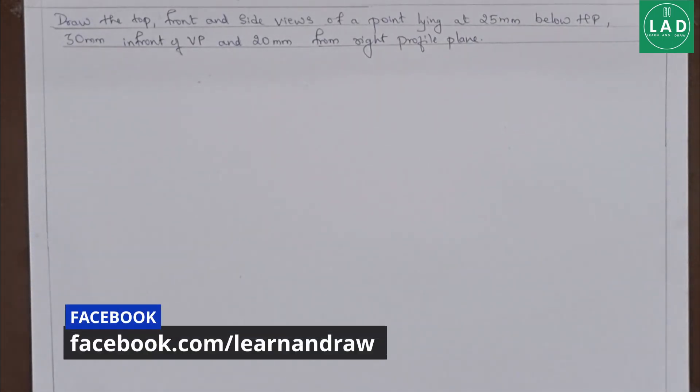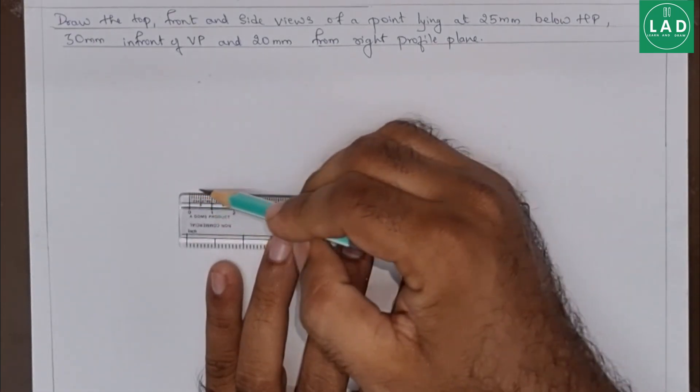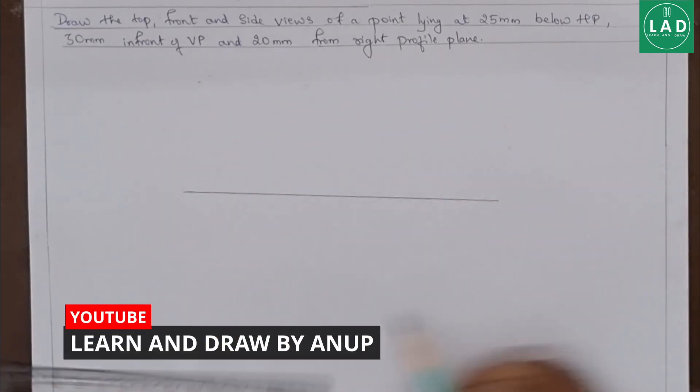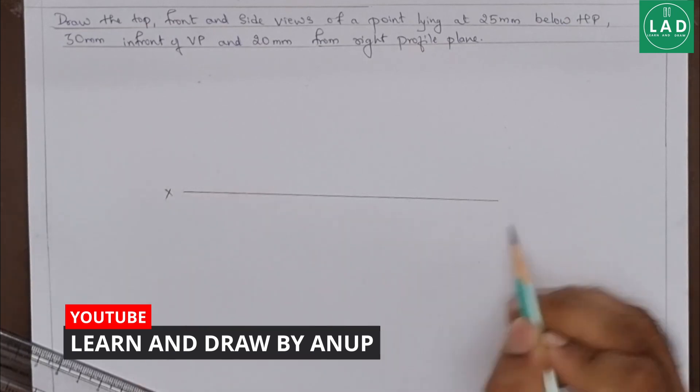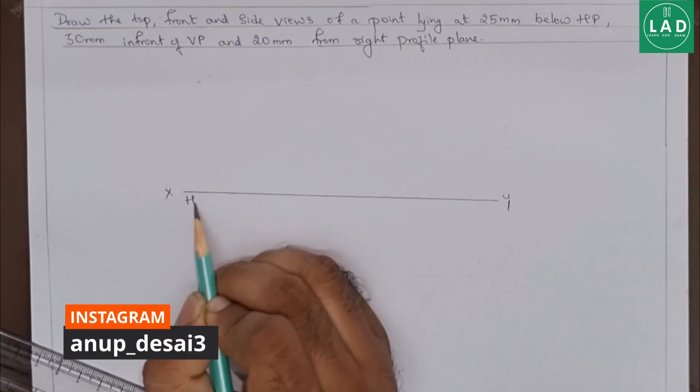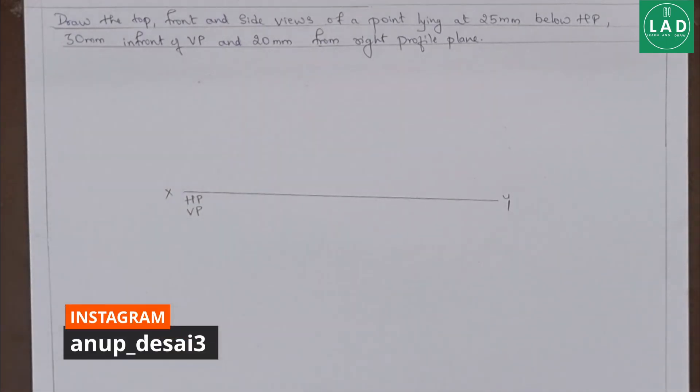Now, first, let's draw an XY line of convenient length. Let's name this as XY and then VP and HP.